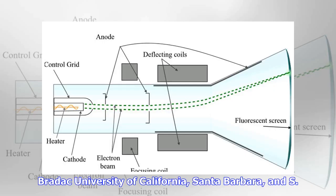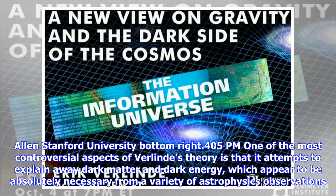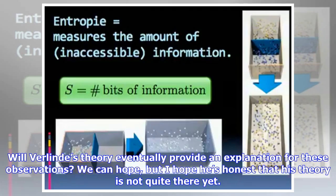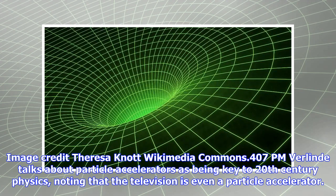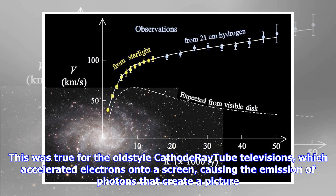Four colliding galaxy clusters showing the separation between X-rays in pink and gravitation in blue, indicative of dark matter. Image credit from various telescopes and observatories. One of the most controversial aspects of Verlinde's theory is that it attempts to explain away dark matter and dark energy, which appear to be absolutely necessary from a variety of astrophysics observations. Will Verlinde's theory eventually provide an explanation for these observations? We can hope, but I hope he's honest that his theory is not quite there yet.